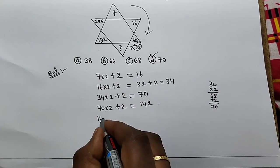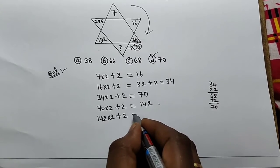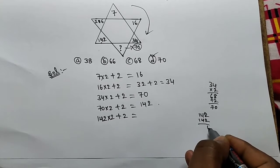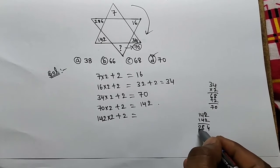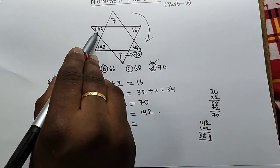Next, 142 into 2 plus 2. 142 times 2 is 284. 284 plus 2 equals 286.